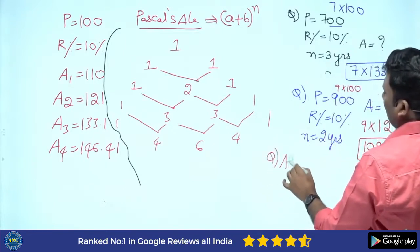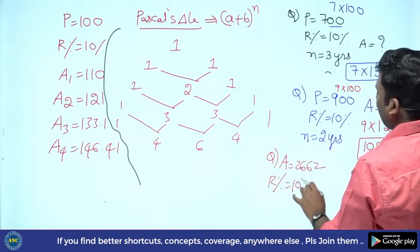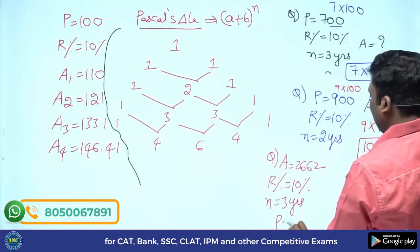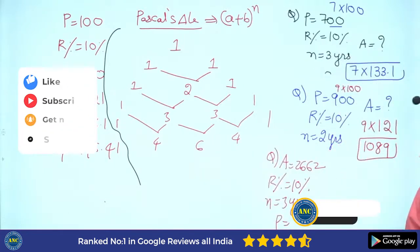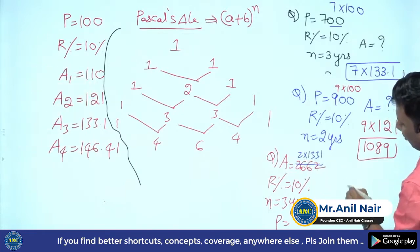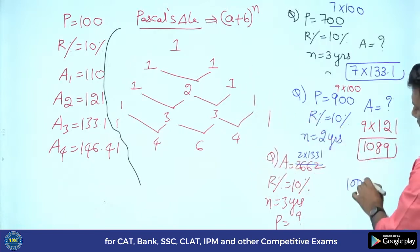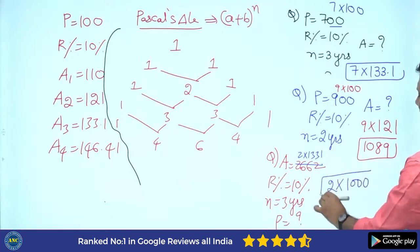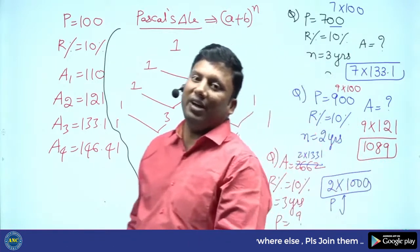Suppose the question is: Amount is 2662, R is 10 percentage, N is 3 years — what is the principle? Note that 2662 equals 2 times 1331. For P=100, amount after 3 years is 133.1; for P=1000, amount is 1331. Since the amount is doubled, the principle is also doubled — you get these answers very, very fast.